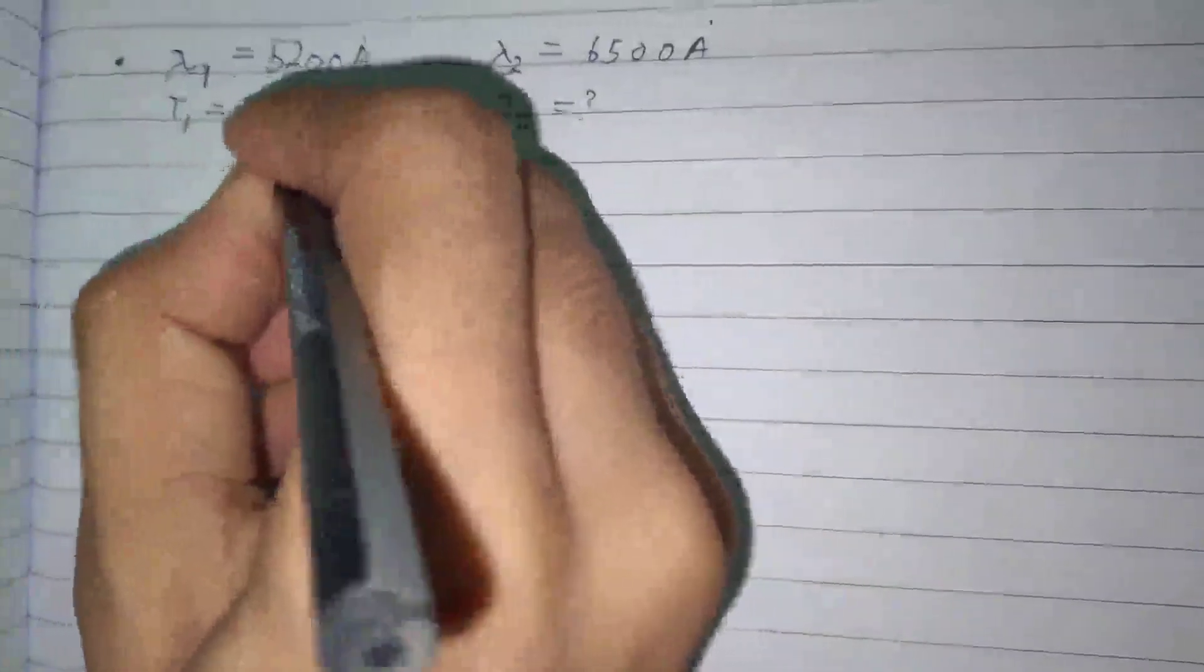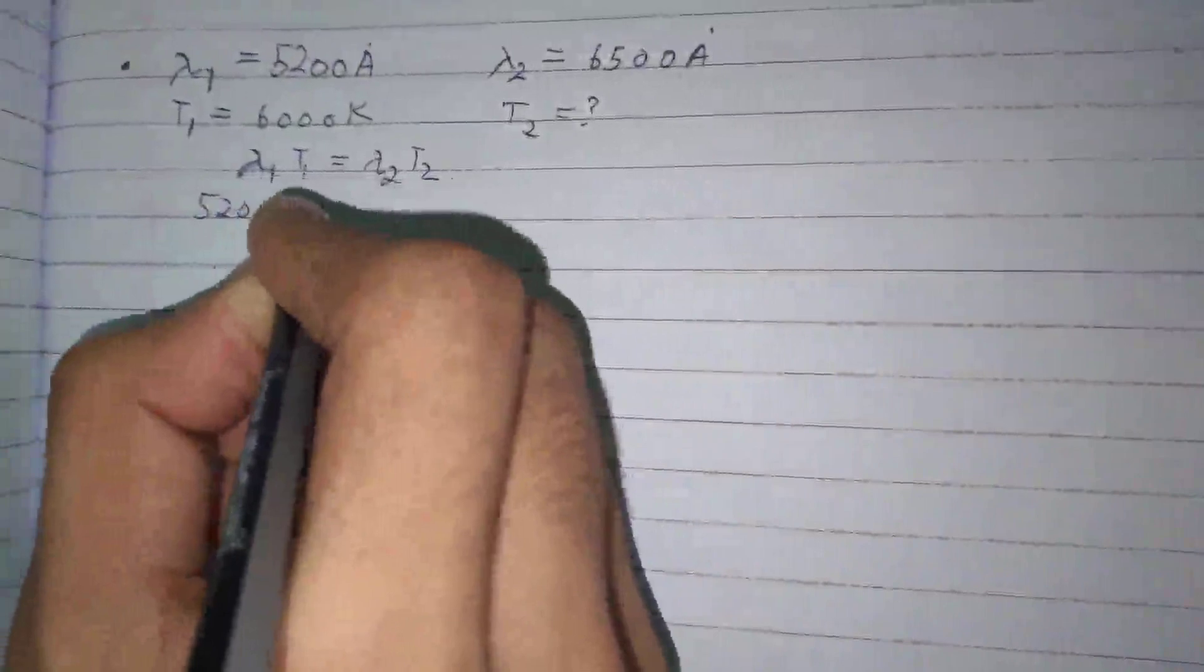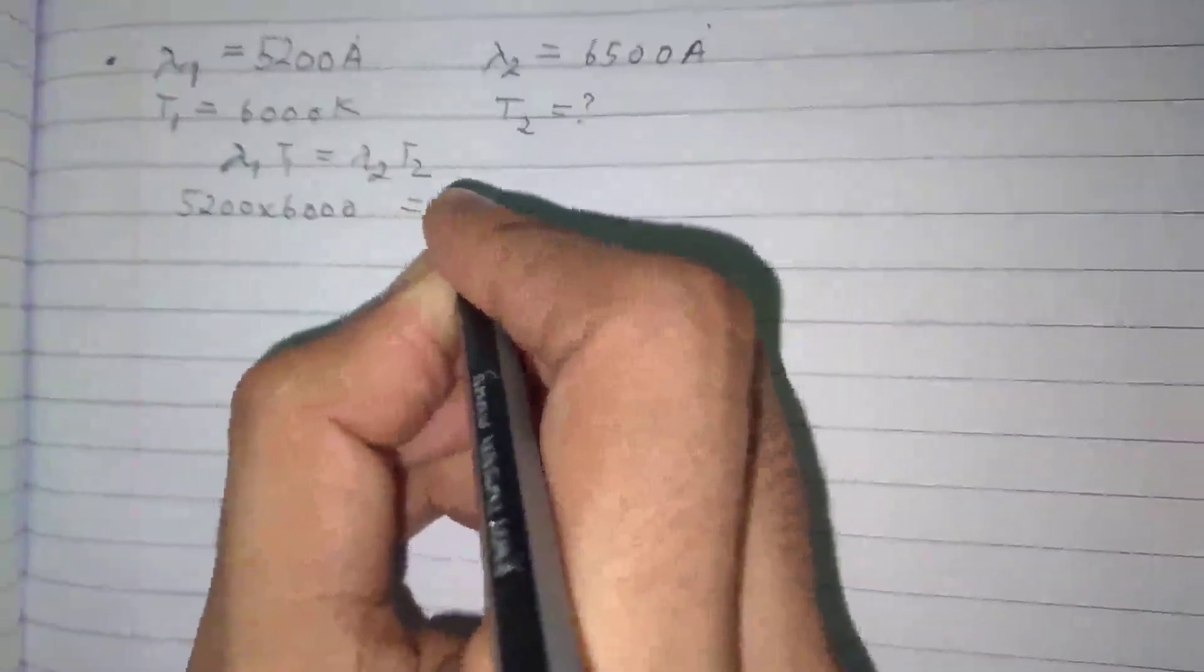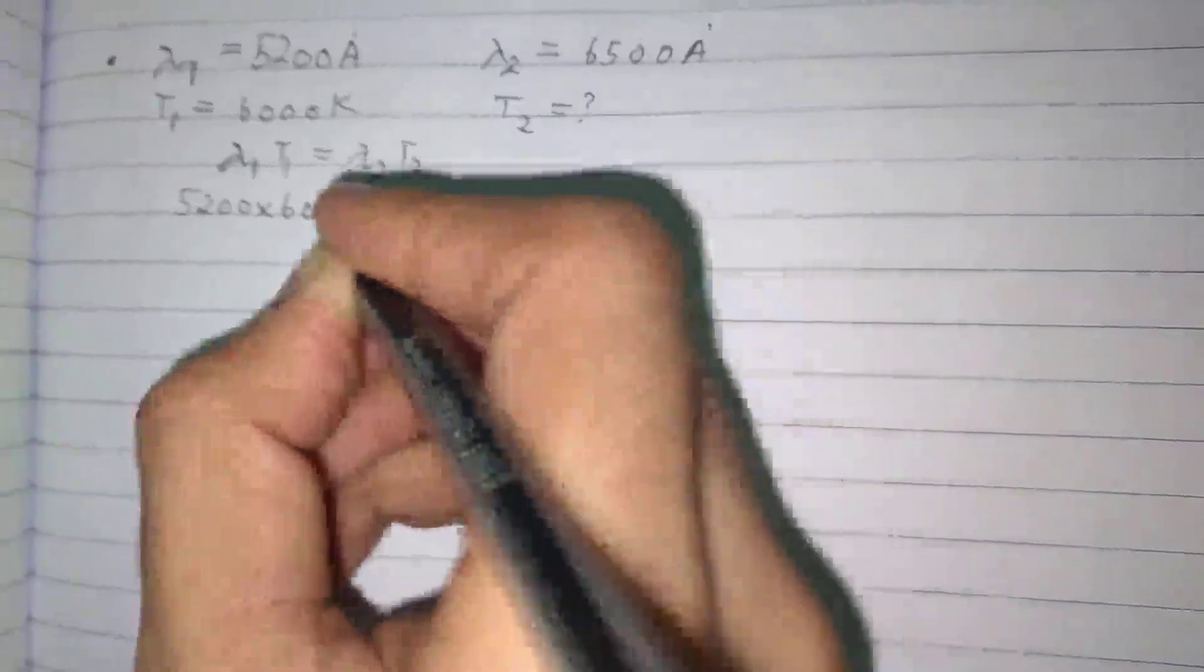lambda 1 into T1 is equal to lambda 2 into T2. Toh lambda 1 is 5200 into 6000 equals 6500 into T2.